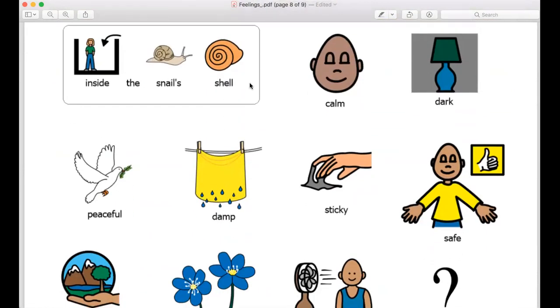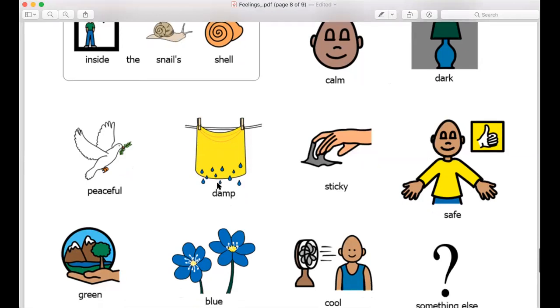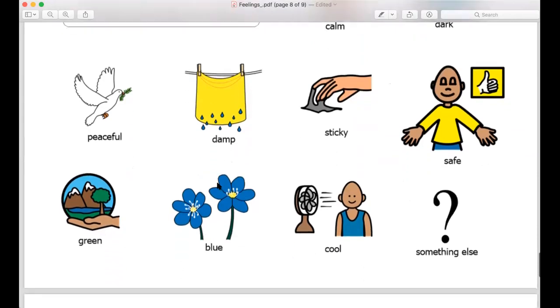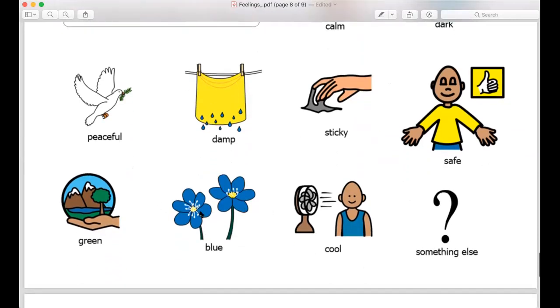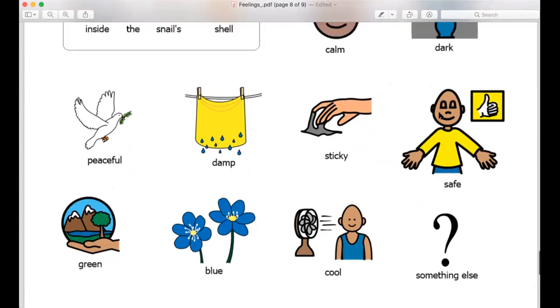Inside the snail's shell. Here's some ideas. It might have been dark. It might have been calm. It might have been damp. Perhaps it was green or blue. Cool. We read the word sticky, that there was a sticky trail that the snail made when it was walking. It may have been peaceful.